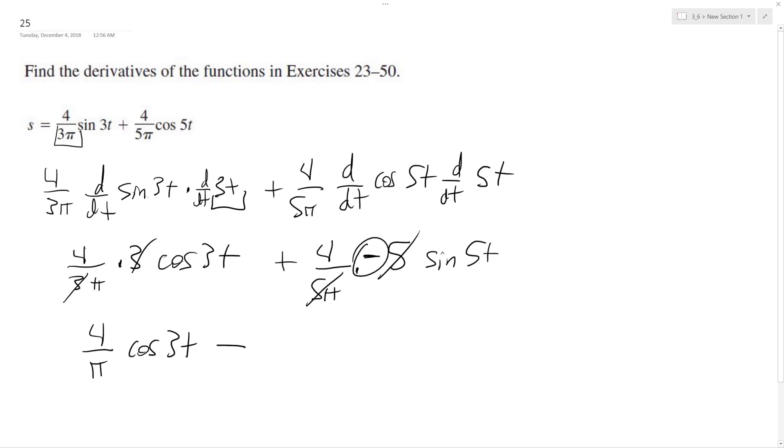So we end up with 4 over pi cosine 3t minus, because this... 5 over, not 5, excuse me, 4 over pi, because these two fives cancel out, sine of 5t.